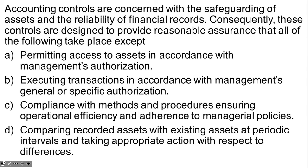This is a fairly straightforward word question — there are no numbers, no calculations. We're going to read the question and go through the choices to determine which is the best answer. The question reads: 'Accounting controls are concerned with the safeguarding of assets and the reliability of financial records. Consequently, these controls are designed to provide reasonable assurance that all of the following take place — except.'